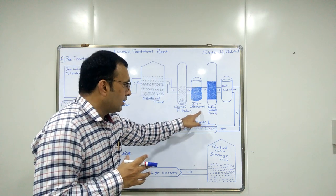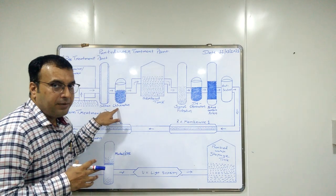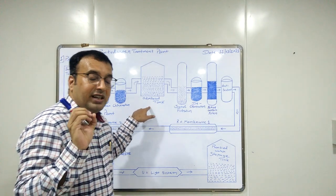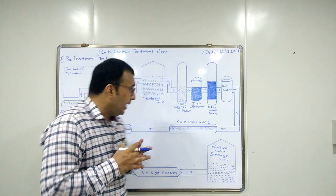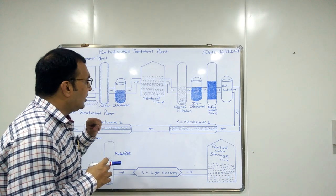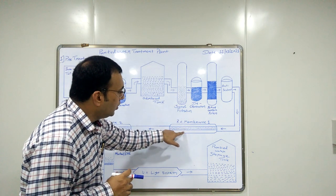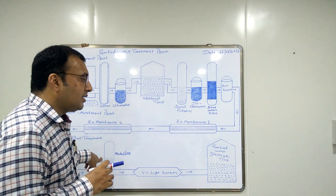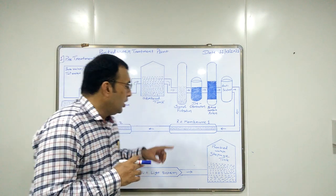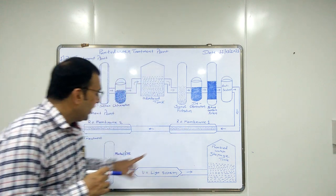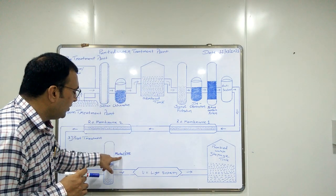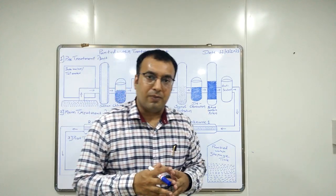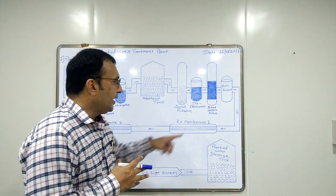Next is dechlorination. After chlorination, there might be some traces of free chlorine present in this water. This free chlorine is corrosive in nature. If this free chlorine is not removed, it could enter the RO unit and the mixed bed unit, and it can damage the membrane of the RO unit and the mixed bed resin. For preventing these damages, this free chlorine must be removed from the water, and this activity is done by dechlorination.